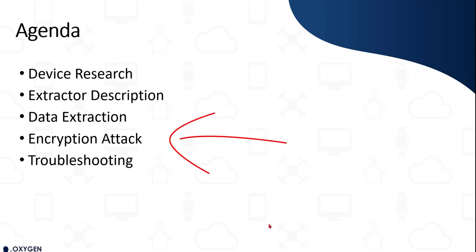In a disk encryption world we want to get the encryption attack done first to get a master key available to unlock the data. In a file-based encryption world we do it the opposite way — pull all the data first, then go back and read the hardware key information and meld that into the magic sauce that gets us to the keys. This is a file-based encryption environment exploit. I'm going to run the process and let the entire extraction record — it's a 128 gig device.